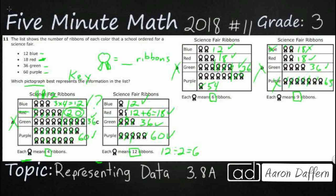So our answer is going to be C. It's got that key of 12 ribbons. And you see 12, 18, 36, and 60.